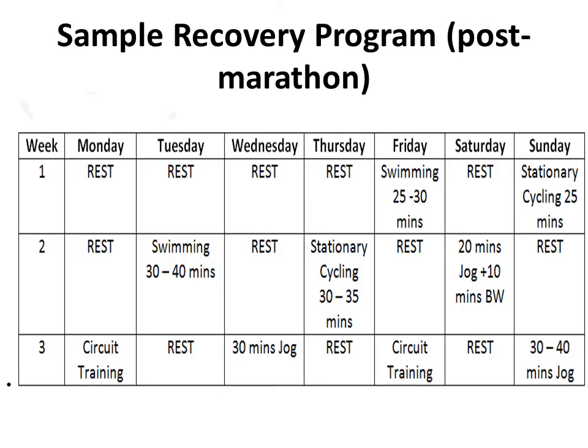Here is a sample recovery program for the post-marathon period. We start off with very easy activities in the first week — swimming and stationary cycling — with duration kept short at about 30 minutes. By week two, you introduce some light jogging and stationary cycling. By week three, you move into circuit training, weight-bearing, full impact activity, with about 30 to 40 minutes of light jogging. It's a gradual build-up of intensity and stress exposed to the muscles.